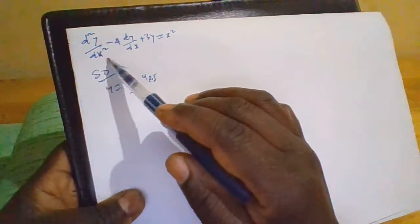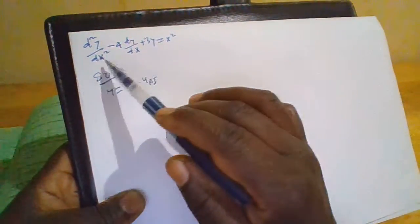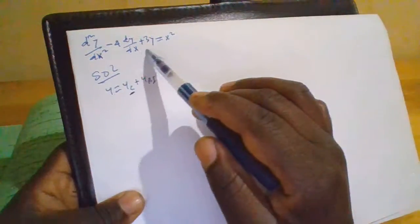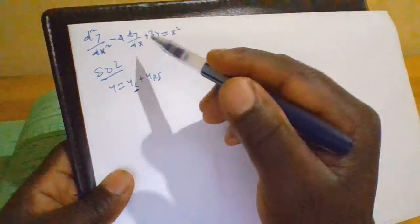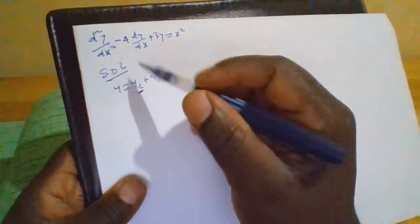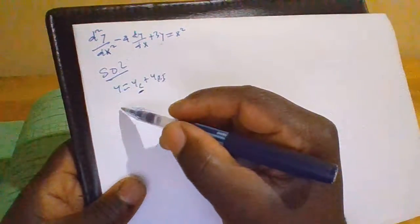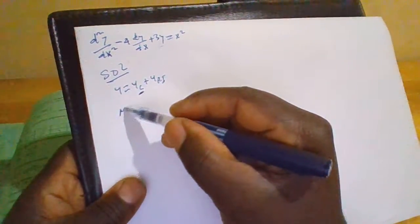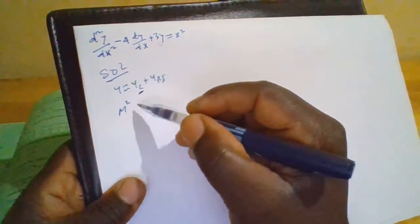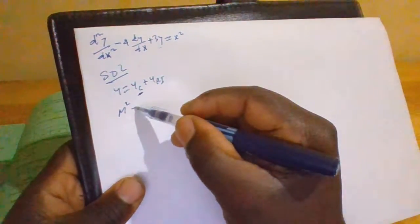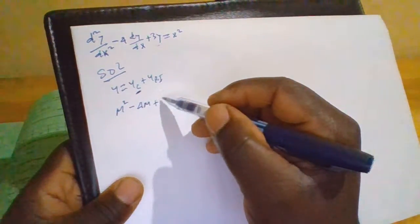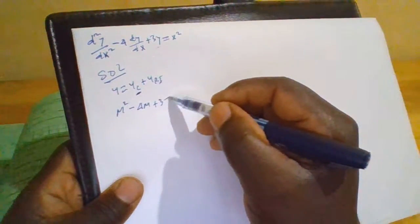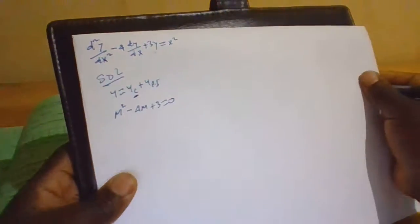We extract the auxiliary equation from this expression. The auxiliary equation will be m squared minus 4m plus 3 equals zero.